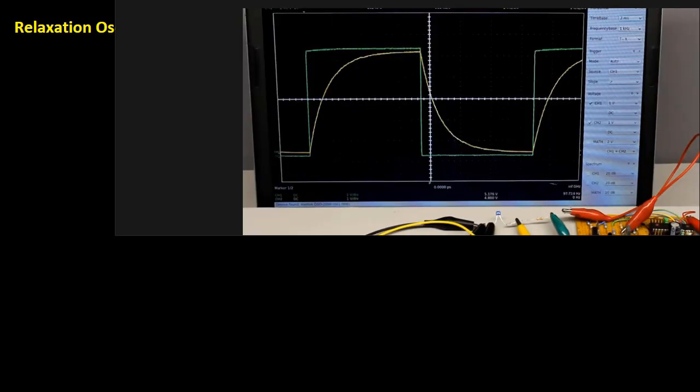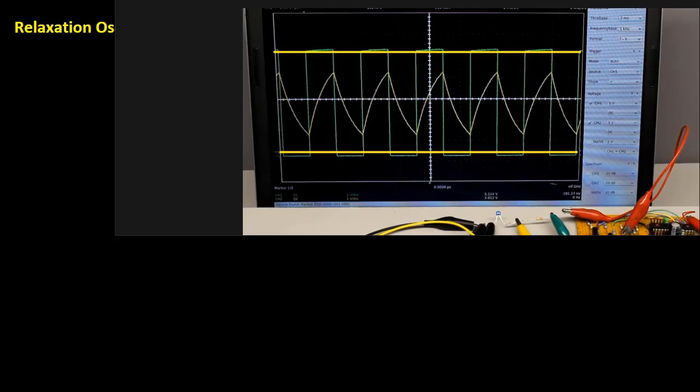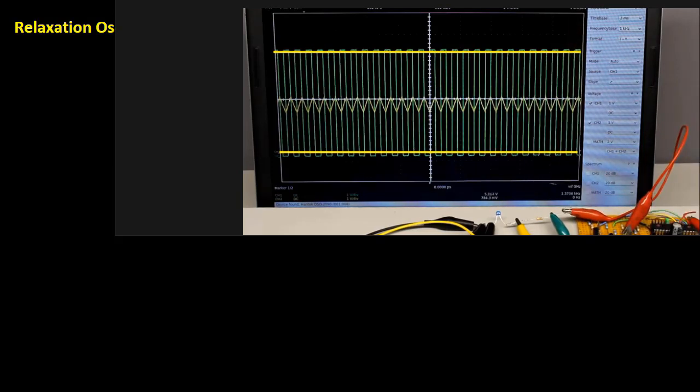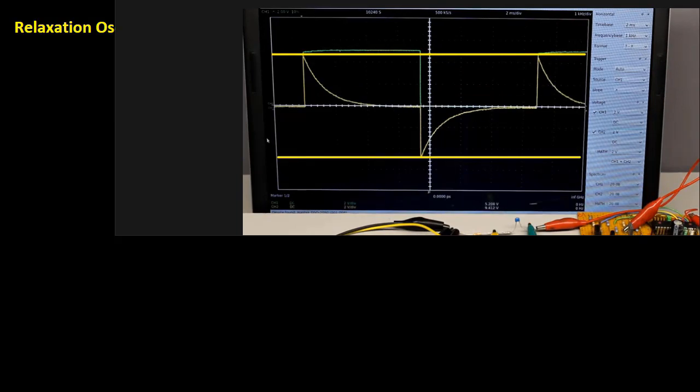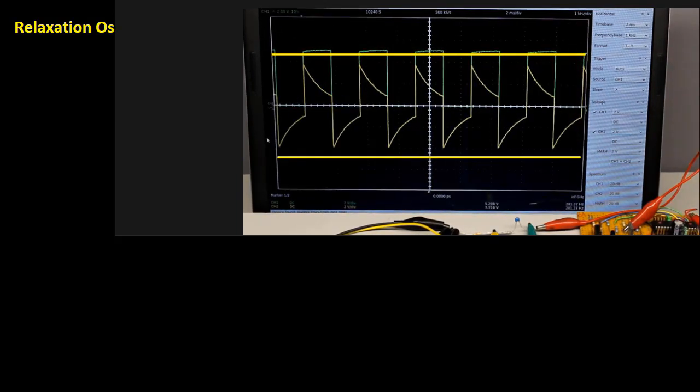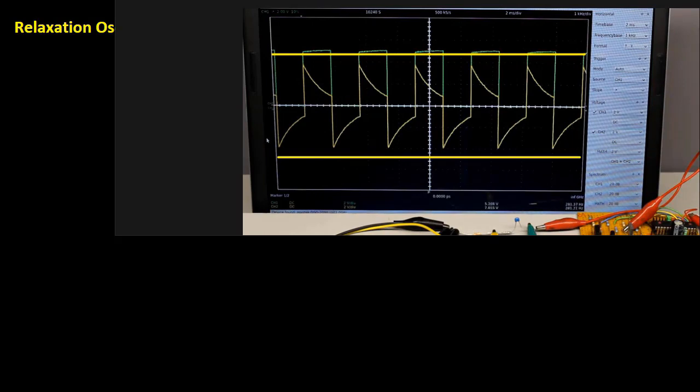Perhaps the easiest type of oscillator to design is the RC relaxation oscillator. Its oscillating nature can be explained by the following principle: charging a capacitor via a resistor and then discharging it when the capacitor voltage reaches a certain threshold. The cycle is then repeated continuously.